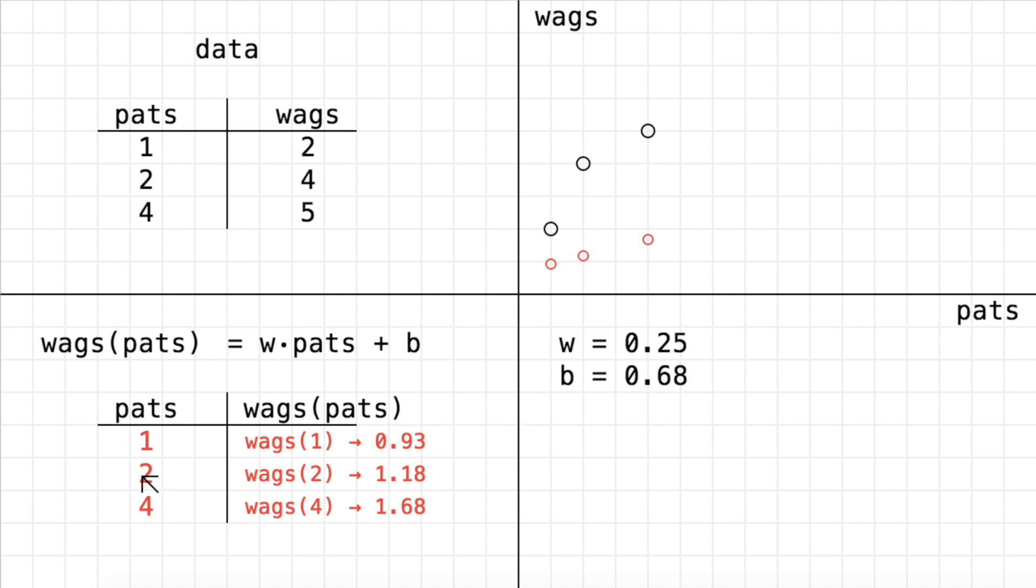Well, let's see what it predicts for two pats. So we plug in a 2. W and b still remain the same values. So the only thing that's changed is now pats is equal to 2, and we get a model prediction of 1.18. So again, how I read this is for two pats, our model is predicting 1.18 wags. And again, we plug in a 4 this time. W and b are the same. So we have 4 times w plus b, and that evaluates or simplifies to 1.68. That's what this arrow means. This formula simplifies to 1.68.